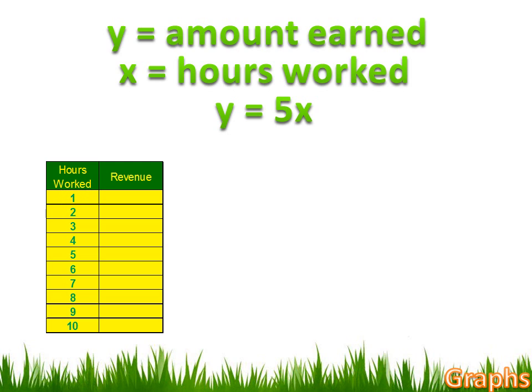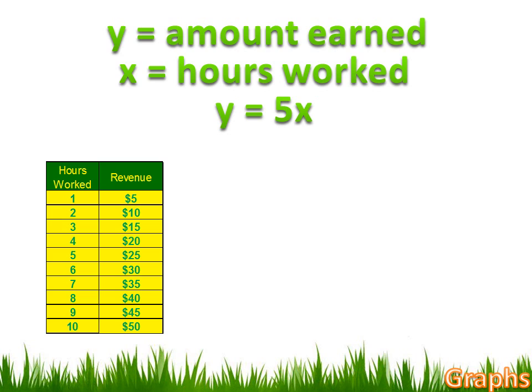For instance, if I input 1 into the equation for X, then I've got Y equals 5 times 1, or $5. If I work 1 hour, I'm going to have $5 worth of revenue. If I work 2 hours, I input 2 in for X, and I've got Y equals 5 times 2, or $10. I could do that for all the other numbers on this table — if I worked 7 hours, I'm going to make $35.